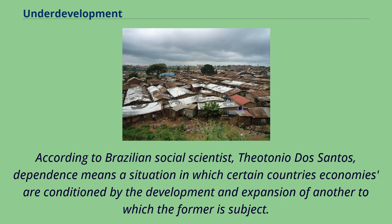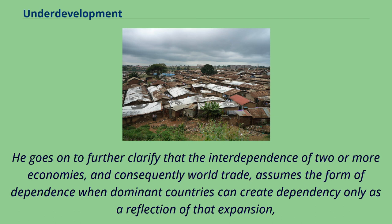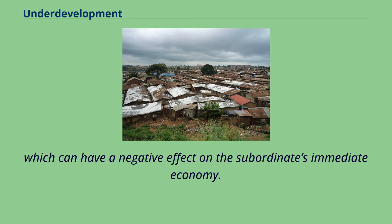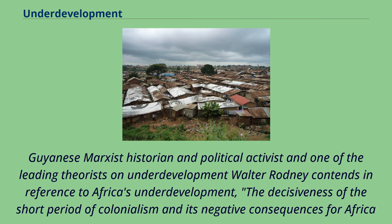World Systems Theory argues that development and underdevelopment are created simultaneously. According to Brazilian social scientist Theotônio dos Santos, dependence means a situation in which certain countries' economies are conditioned by the development and expansion of another to which the former is subject. He further clarifies that the interdependence of two or more economies — and consequently world trade — assumes the form of dependence when dominant countries can expand only as a reflection of that expansion, which can have a negative effect on the subordinate's immediate economy.